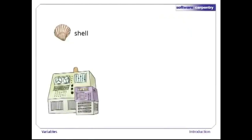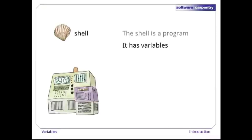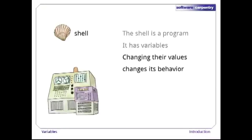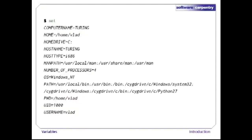The shell is just a program, and like other programs, it has variables. Those variables control its execution, and by changing their values, you can change how the shell and other programs behave. Let's start by running the command 'set' and looking at some of the variables in a typical shell session. As you can see, there are quite a few — in fact, four or five times more than what's shown on this slide.